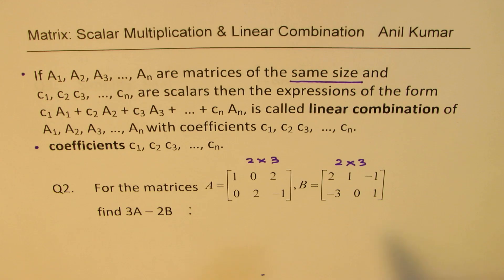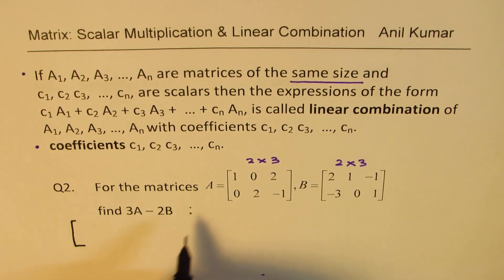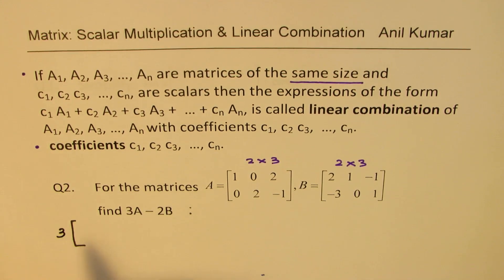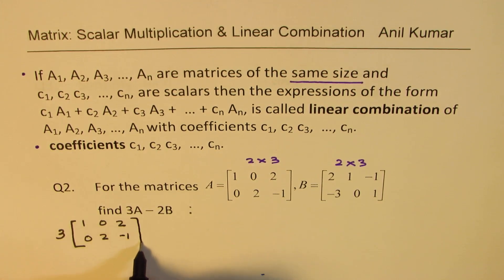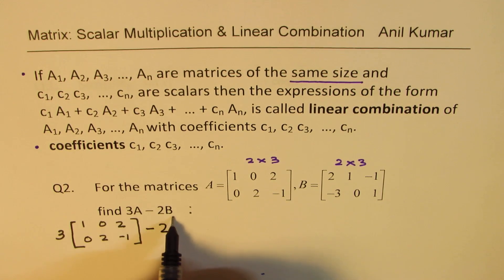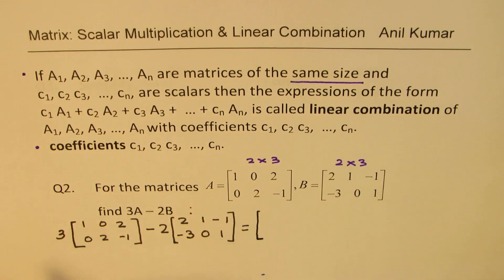So first step will be, so we are saying three times, we'll do all this: one, zero, two, zero, two, minus one. And minus two times we'll do all that which is two, one, minus one, minus three, zero, one.